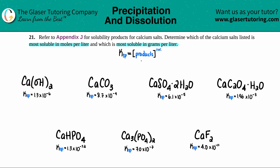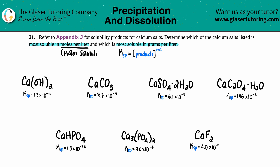We're going to try to do this a little quickly because it's kind of like repetition and pattern recognition. I took each salt with their respective Ksp values, and from these we just have to figure out which one is the most soluble in moles per liter first. Keep in mind that solubility in moles per liter is the same as molar solubility — they're basically asking for the molar solubility of each of these seven salts.